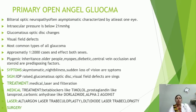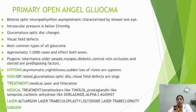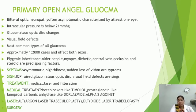In primary open angle glaucoma, it is a bilateral optic neuropathy characterized by at least one eye with intraocular pressure of about 25 mmHg, optic disc changes, and visual field defects. It is the most common type of all glaucoma — approximately 1 in 2000 cases. It affects both sexes. Predisposing factors include biogenic inheritance, older people, myopia, diabetes, central vein occlusion, and steroid use.